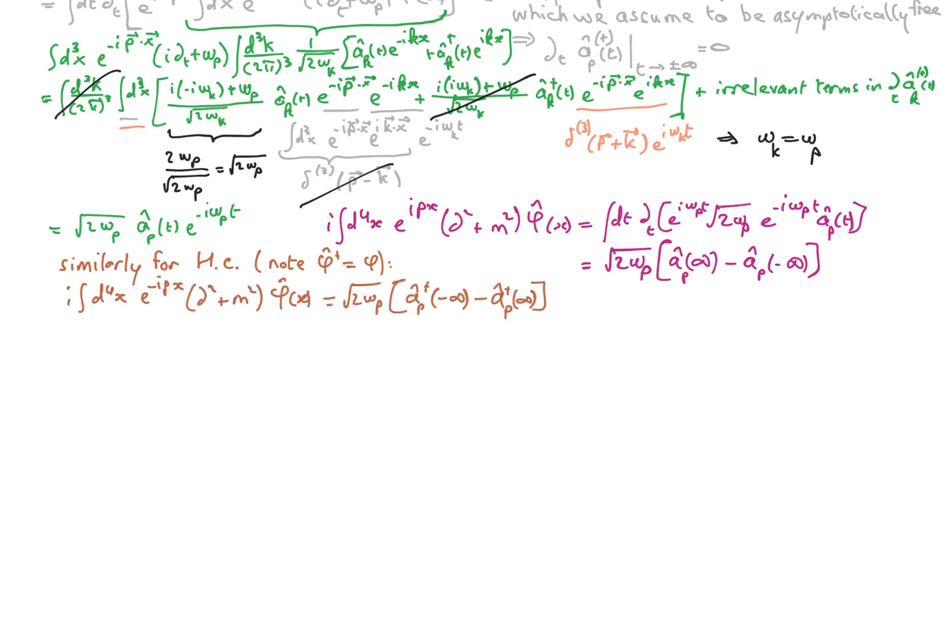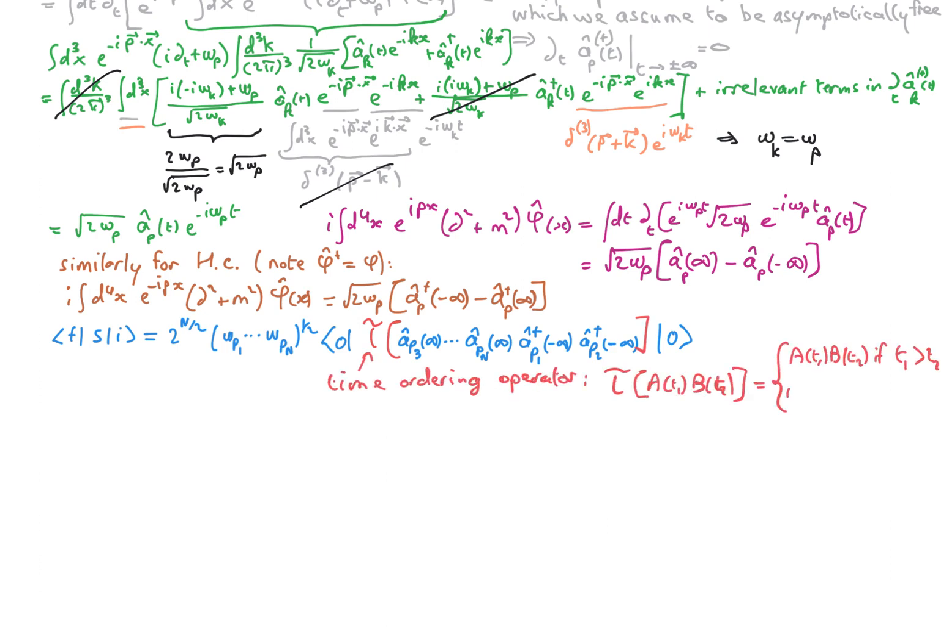Now recall our expression for the S matrix element. We see that all the earlier times are on the right and all the later times are on the left. So we can introduce what we call a time-ordering product or time-ordering operator, although it's not really an operator.